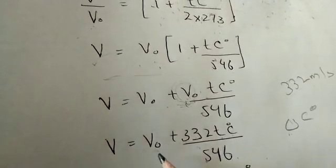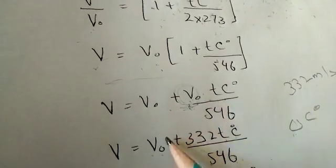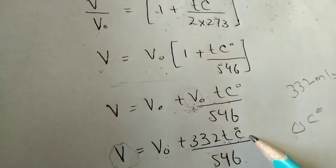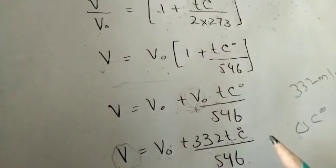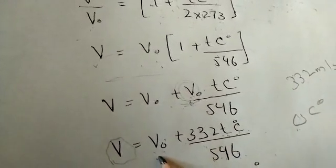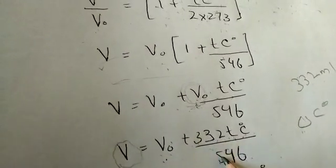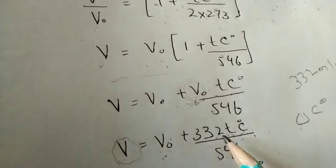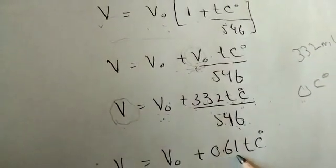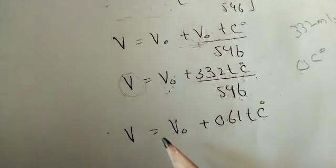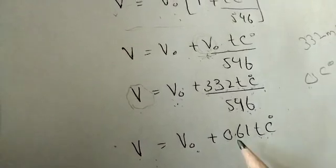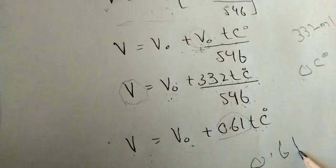This gives the speed of sound at any temperature — whether 1, 2, 50, or 100 degrees centigrade. The original speed of sound is 332 meters per second, and we can find the speed at each centigrade rise in temperature. By dividing 332 by 546, we get approximately 0.61. So the simplified expression becomes V equals 332 plus 0.61 times T_centigrade.